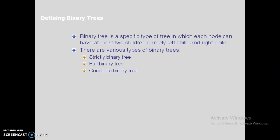Now we move on to binary trees. A binary tree is a specific type of tree in which each node can have at most two children: a left child and a right child. A node should have at most two subtrees — it can be a leaf node, have a single child, or have a maximum of two children.